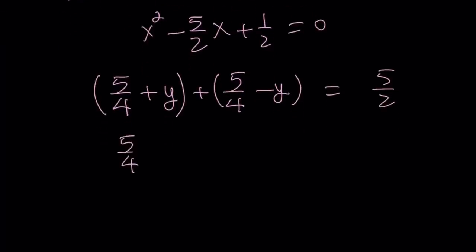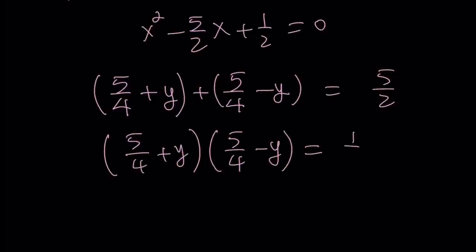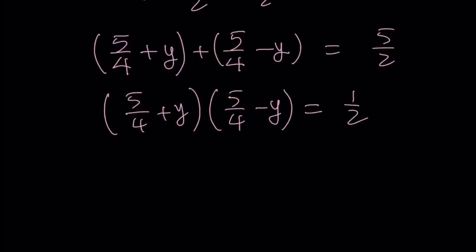Their product is supposed to give us 5 fourths plus y multiplied by its conjugate, that's the key word, and the product is going to give you 1 half. Difference of two squares gives us 25 over 16 minus y squared equals 1 half. Let's write it as 8 over 16.